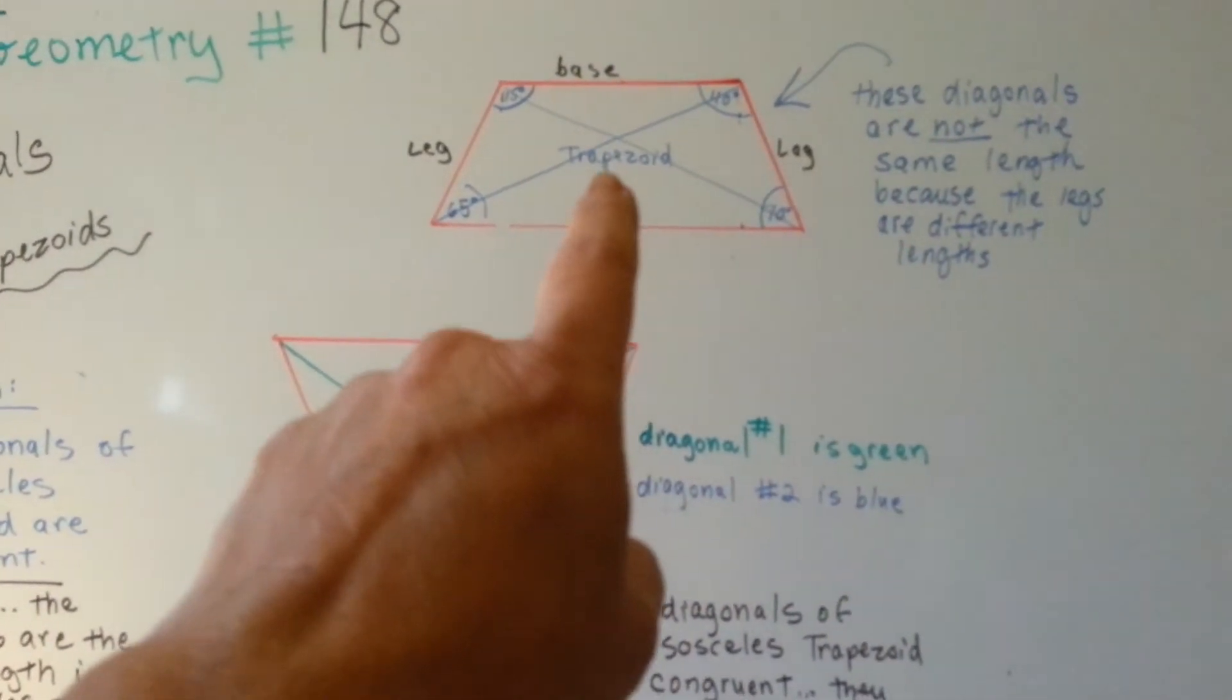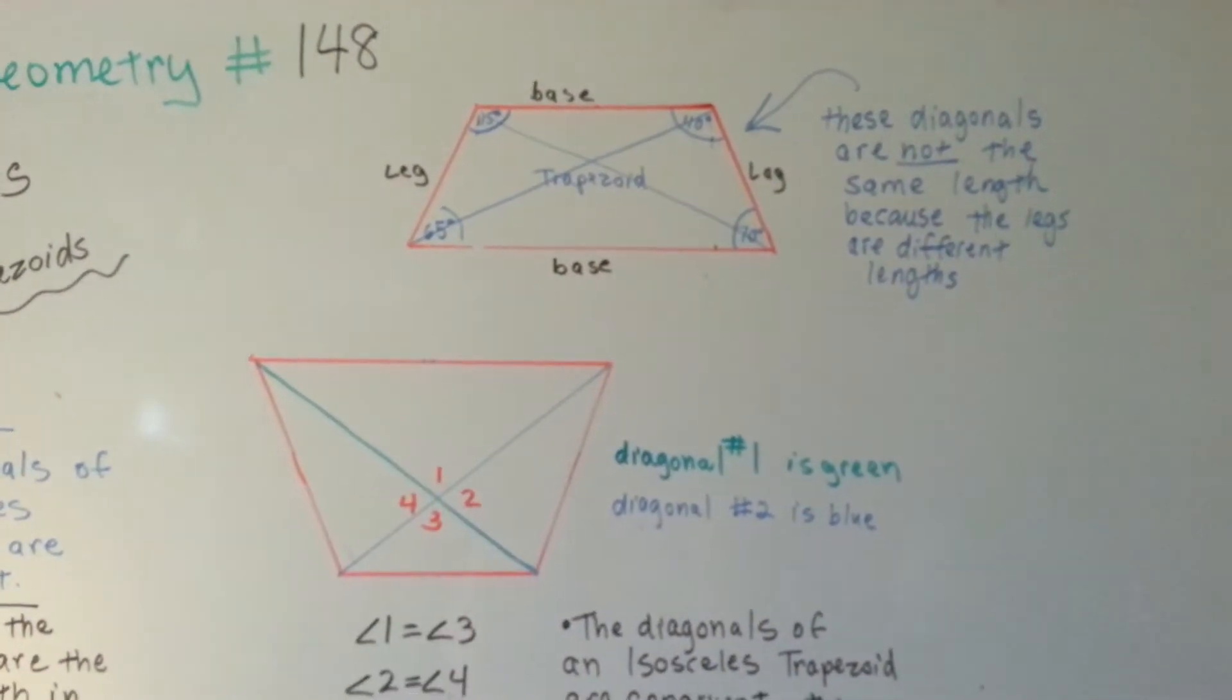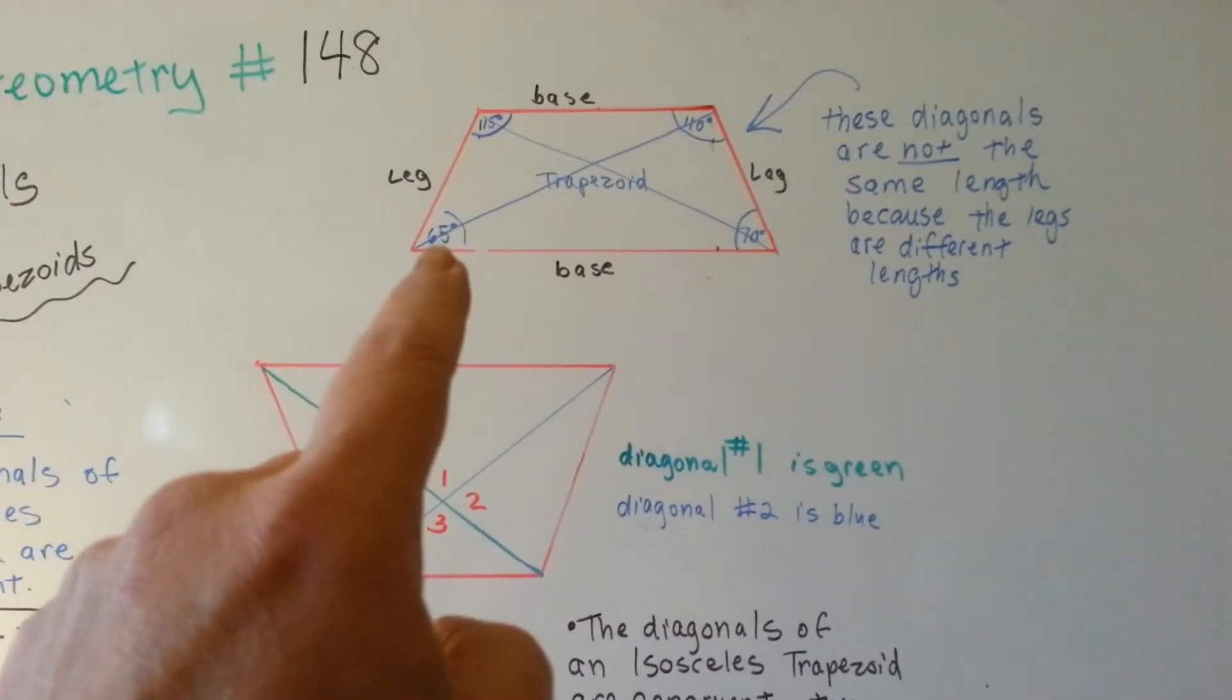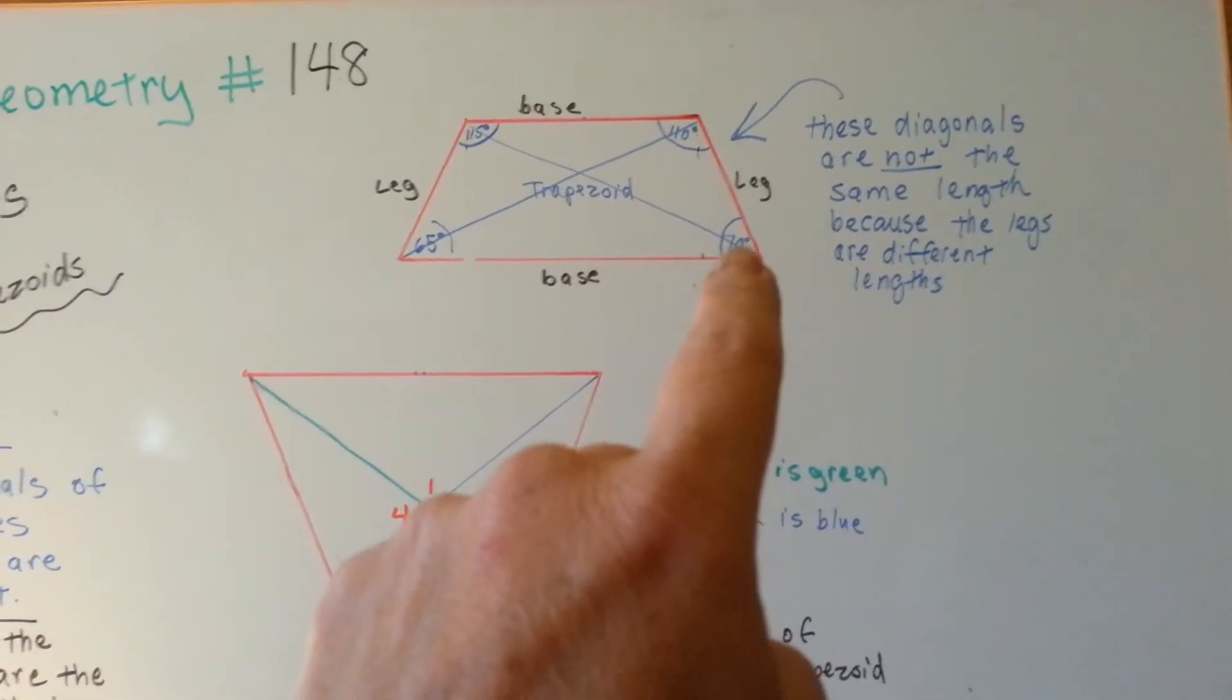This one is a regular trapezoid that has legs that are two different lengths, because this angle is 65 degrees and this one's 70.